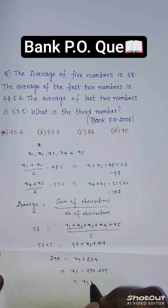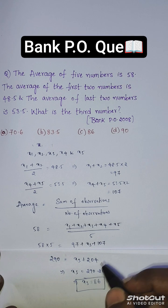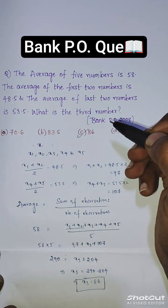This is the unknown number. So option C is the correct answer.